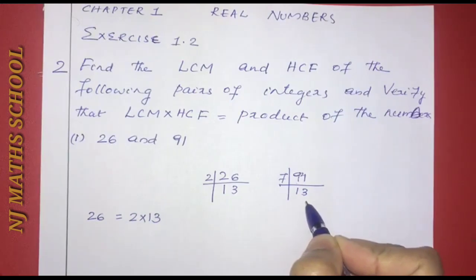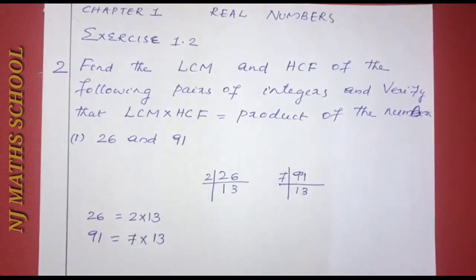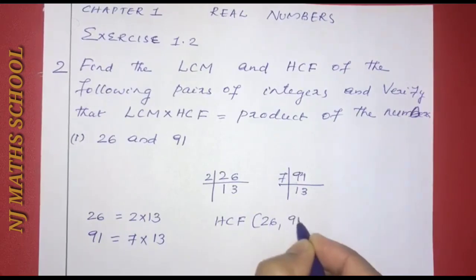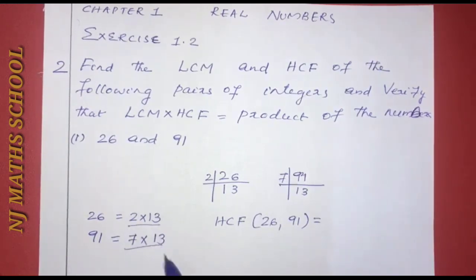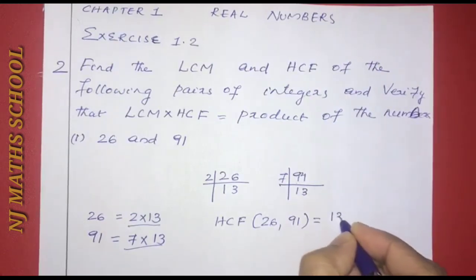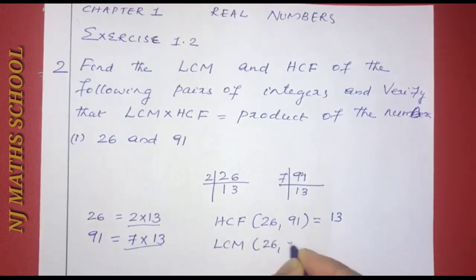The first pair: HCF of 26 and 91. We use prime factorization for both numbers. Looking at the common factors, we find 13 is a common factor. 13 is at the lowest power of 1, so HCF is 13.